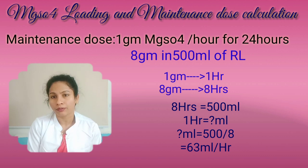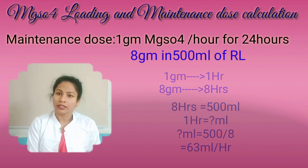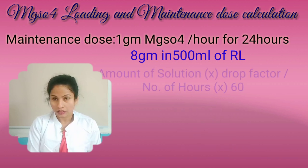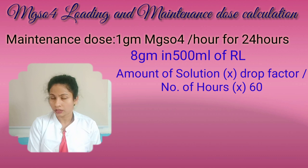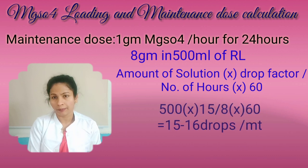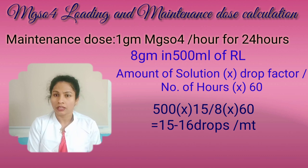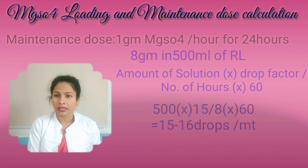To make the 500 ml run correctly, you need to understand drop factors. To calculate the drip rate, the formula is: total amount of solution multiplied by the drop factor, divided by total number of hours multiplied by 60. Applying the given values gives the required drop rate. Clear instructions regarding the drop factor will be explained in the next session.